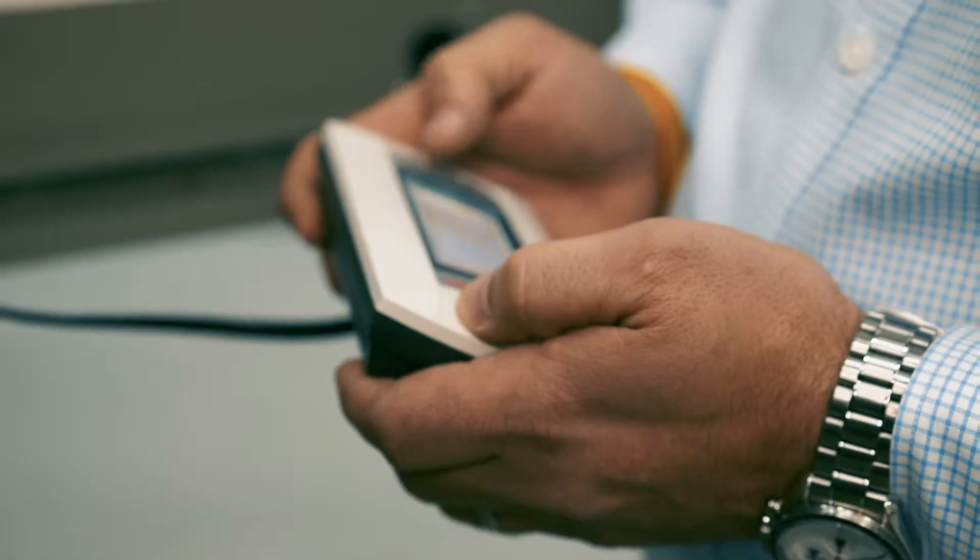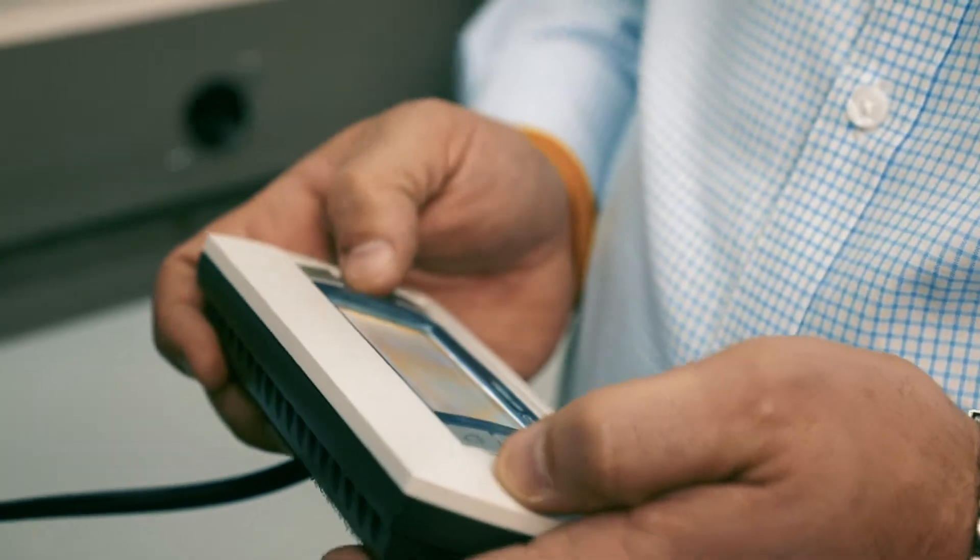One nice thing about the Corel Controller is it logs 200 of your alarms so you can go back over historical data and see the last 200 alarms you've had in the unit and it'll also show you the running conditions at each of those alarms.